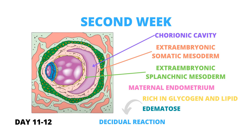Subsequently, this chorionic cavity surrounds the primitive yolk sac and the amniotic cavity, except at the point where the germinal disc connects with the trophoblast by means of the fixation pedicle. As a consequence of the appearance of the chorionic cavity, the extraembryonic mesoderm splits into two sheets: one covering the cytotrophoblast and amnion, known as the extraembryonic somatic mesoderm, and the other covering the yolk sac, known as the extraembryonic splanchnic mesoderm. The maternal endometrium becomes rich in glycogen and lipids and also becomes edematous; these changes are known as the decidual reaction.